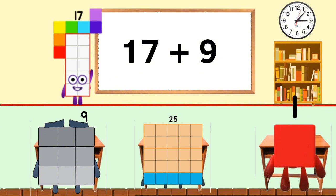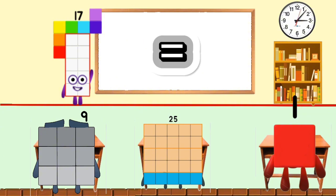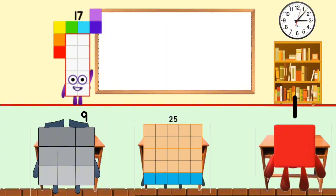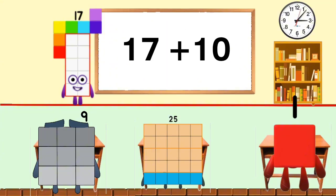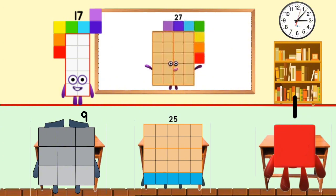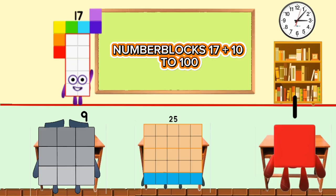17 plus 9 equals 26. 17 plus 10 equals 27. Number Blocks: 17 plus 10 to 100.